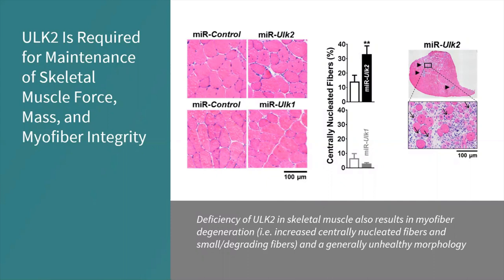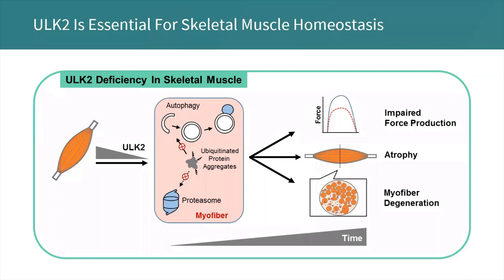What we concluded from these data is that ULK-2 is required for maintenance of skeletal muscle force, mass, and myofiber integrity. In summary, our studies reveal that the ULK-2 gene presents a skeletal muscle-enriched pattern of expression in mice, and that its deficiency in skeletal muscle — despite not impairing autophagy flux and proteolytic activities of the lysosome and proteasome — leads to robust accumulation of insoluble ubiquitinated protein aggregates associated with autophagy adapters p62 and NBR1. These findings suggest a key role for ULK-2 in modulating the recognition and/or sequestration of ubiquitinated protein aggregates for degradation by autophagy and potentially by the proteasome. The ensuing inability of ULK-2 deficient muscle to clear proteotoxic aggregates leads to atrophy, impaired force production, myofiber degeneration, and a generally unhealthy muscle morphology — cellular events and functional outcomes not observed in ULK-1 deficient muscle.